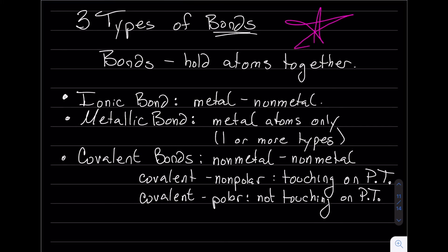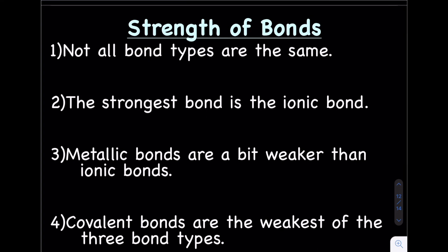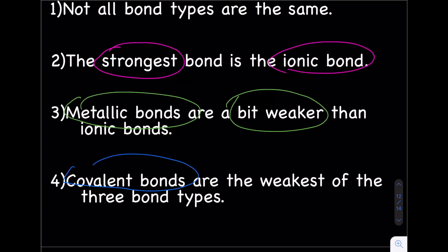We've got one more quick topic: the strength of the three types of bonds. Not all bonds are the same. The strongest bond is the ionic bond. Metallic bonds are a bit weaker. And the weakest of the three are the covalent bonds. And with that, that's it for today — have a good one.